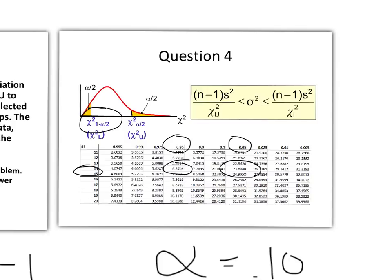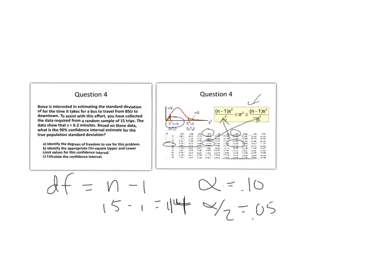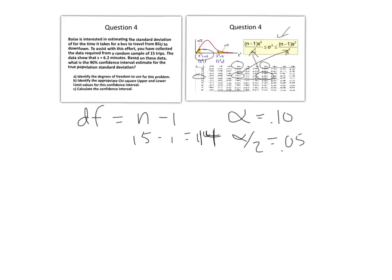So we've got our two values now, and where these will come into play are in this equation right here. We're going to use the upper value here as the denominator, and the lower value here as the denominator in this equation to find our confidence interval.